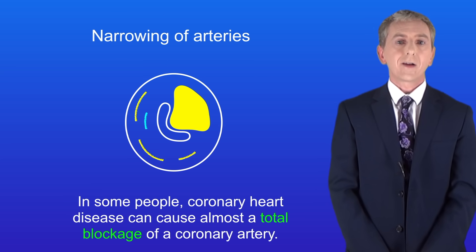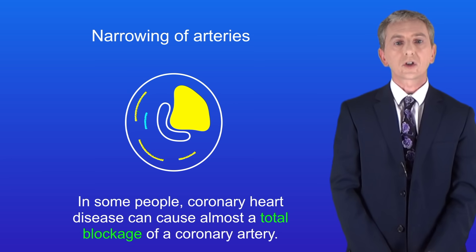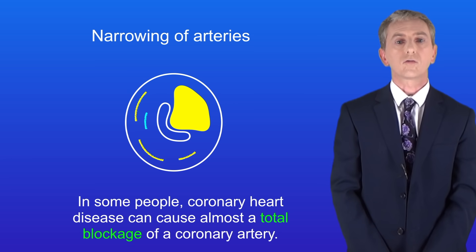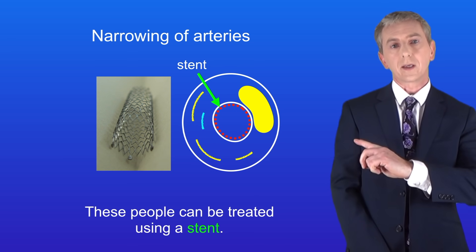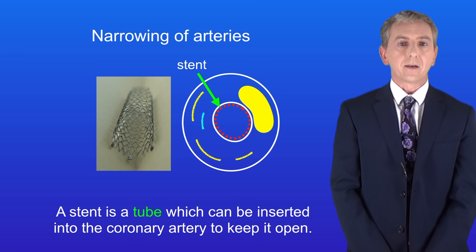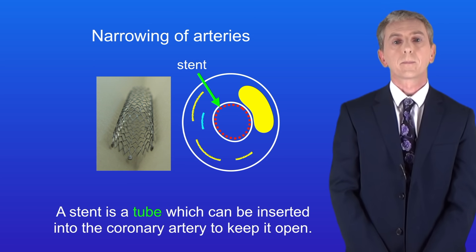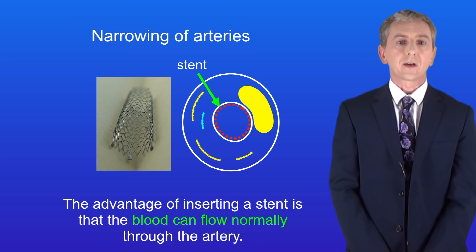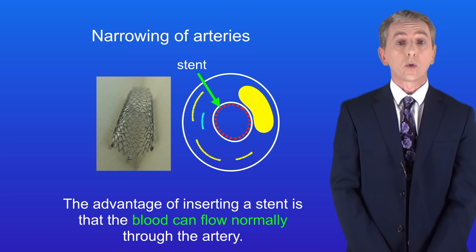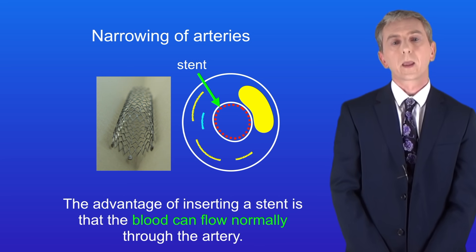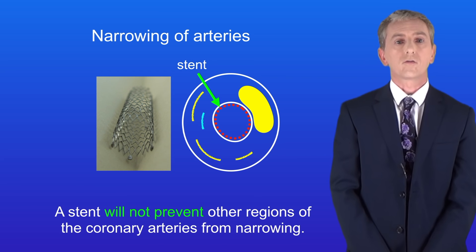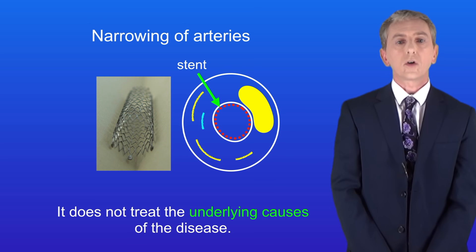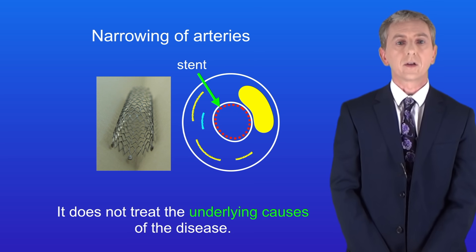In some people, coronary heart disease can cause almost a total blockage of a coronary artery. These people can be treated using a stent — a tube which is inserted into the coronary artery to keep it open. The advantage is that blood can flow normally through the artery. However, a stent will not prevent other regions of the coronary arteries from narrowing and does not treat the underlying causes of the disease.